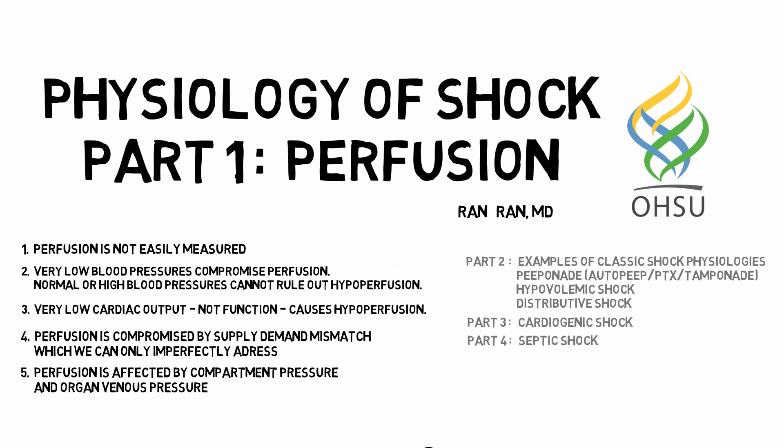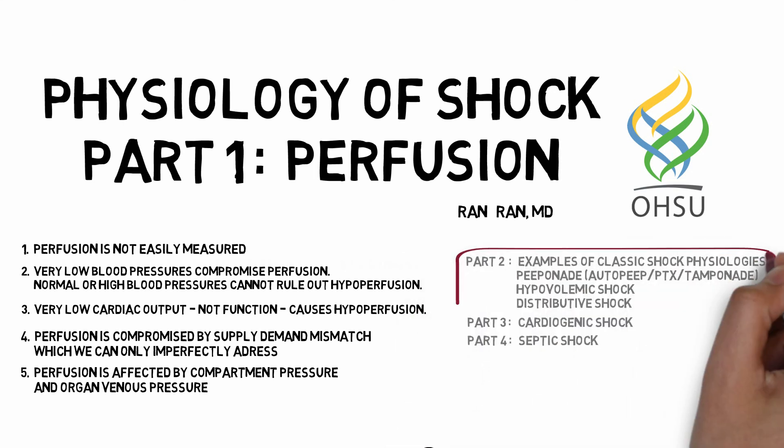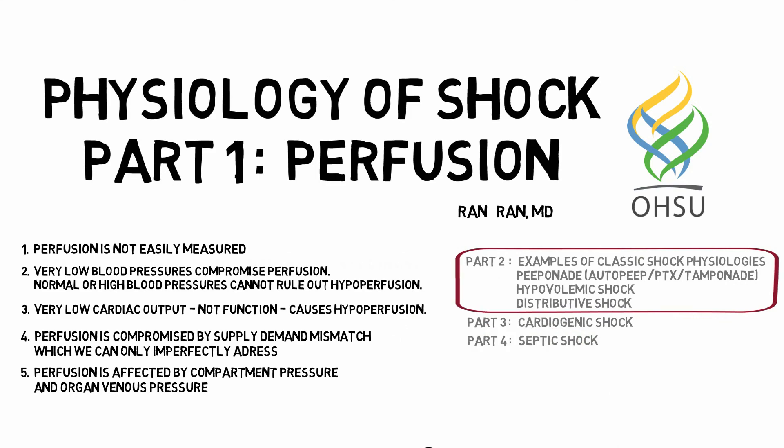Now, I know this seems like a depressing summary of things we can't measure, don't know, and can't do — but don't be discouraged. We can still treat shock well. With a strong mastery of these concepts, you can use the many surrogate markers of perfusion, cardiac output, and stress volume to illustrate the patient's physiology. Concurrently, you start to appreciate the limitations of these surrogate markers, which can sometimes lead you astray. Again, this is Ran Ran from OHSU. I hope you've enjoyed my thoughts and illustrations on perfusion. See you next time in examples of classic shock physiologies.